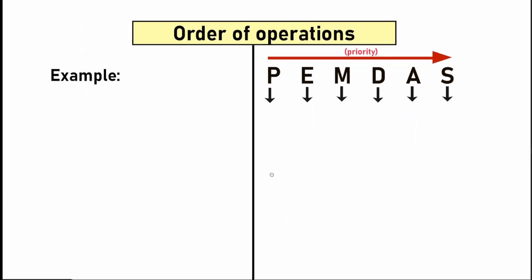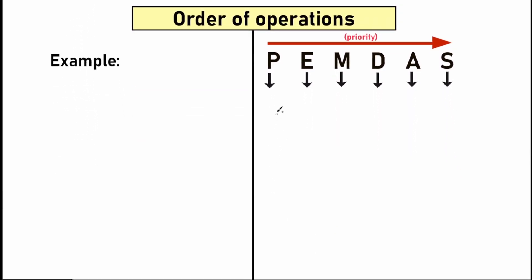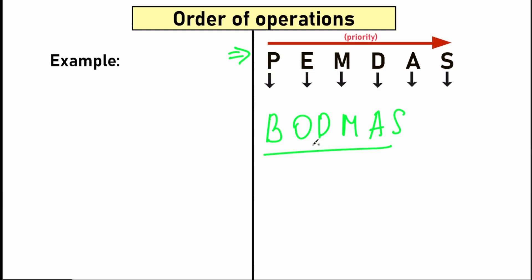This is order of operations. We have what's called PEMDAS, which tells us the correct order to perform mathematical operations. There is also BODMAS — people mostly in India and the UK use BODMAS, while in the US, New Zealand, and Australia people use PEMDAS. There's no difference between them: brackets, orders, division, multiplication, addition, and subtraction is absolutely the same in both.